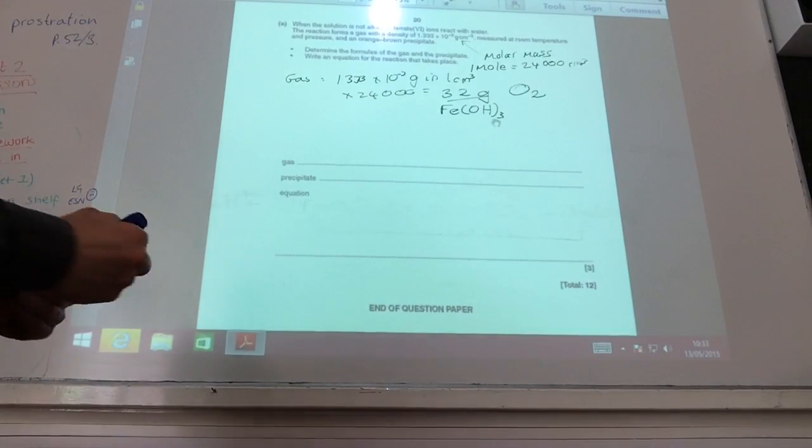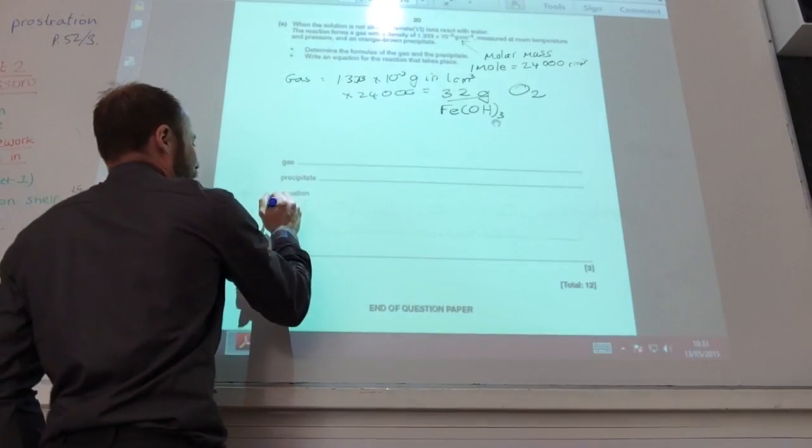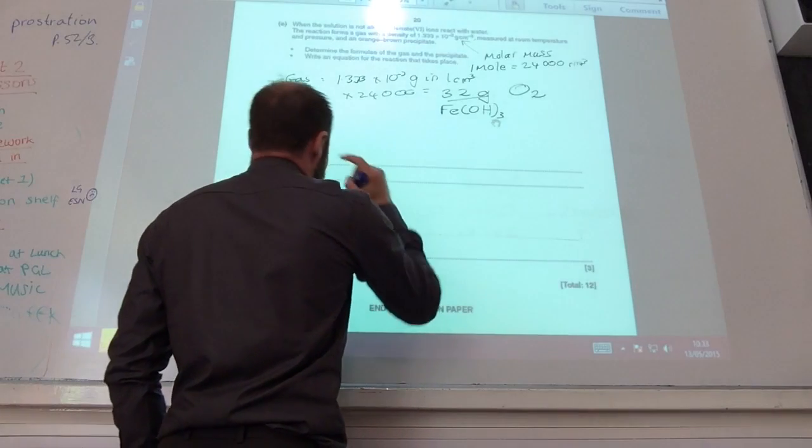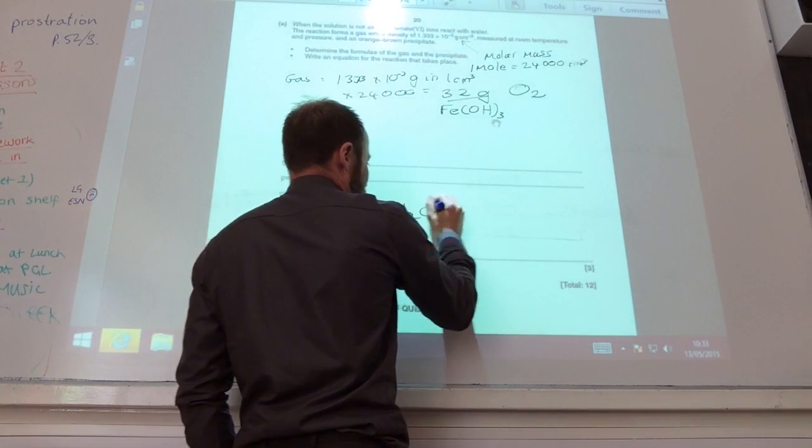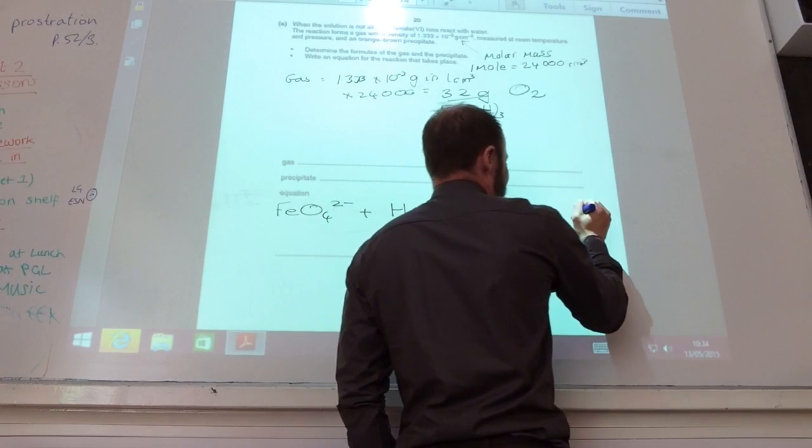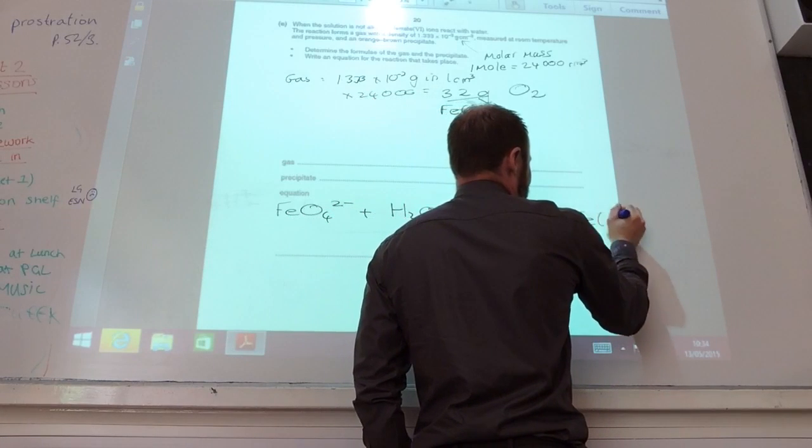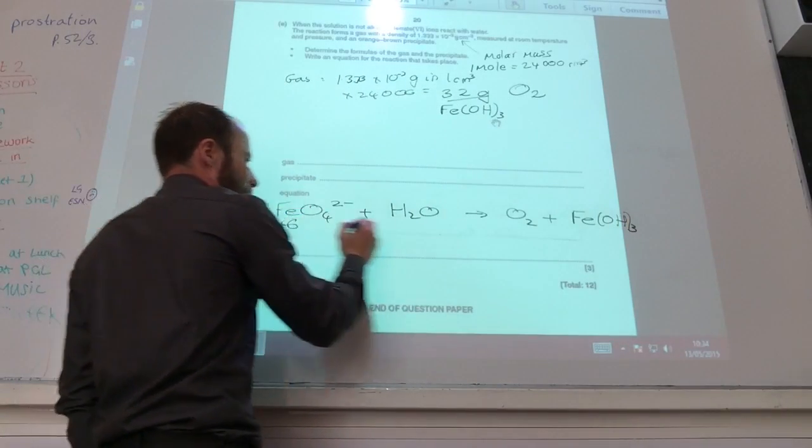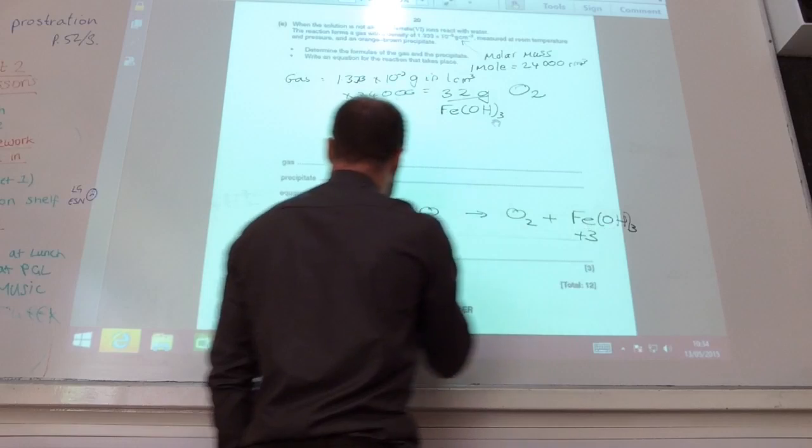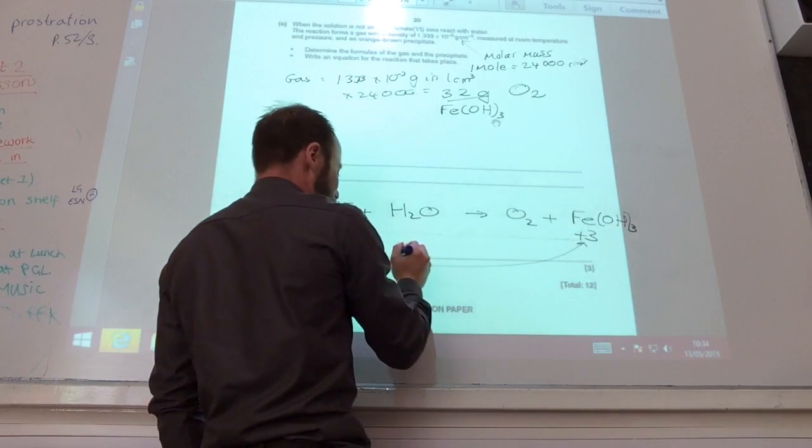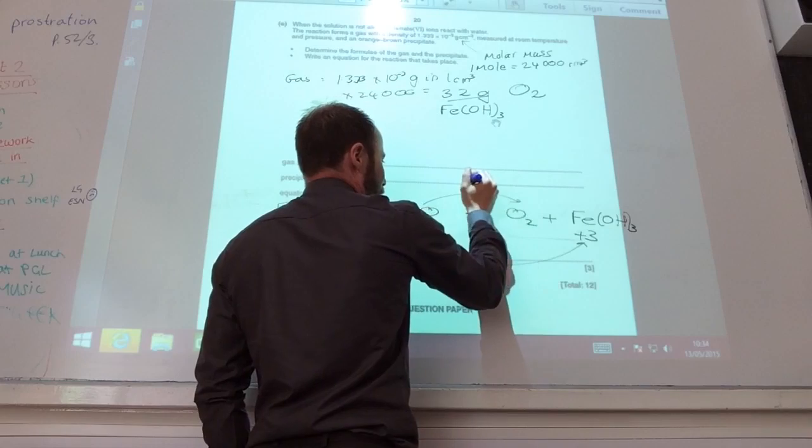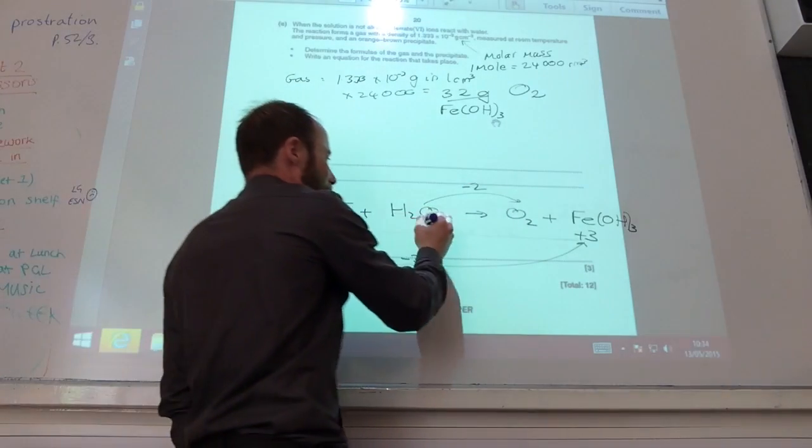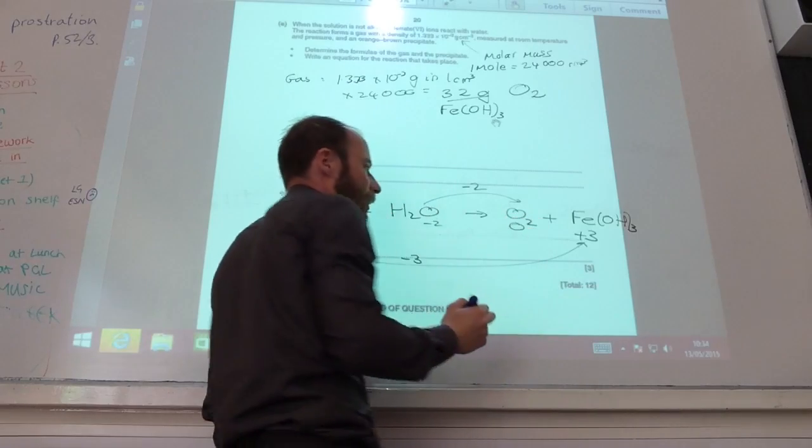So I know I'm going to start off with FeO4^2- plus water. That gives me oxygen gas and it also gives me iron hydroxide. If I do my oxidation state of iron, each iron changes by three and each oxygen changes by minus two. Because that's minus two and that's zero.